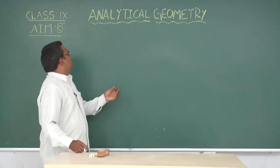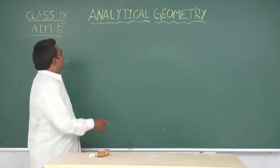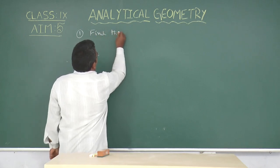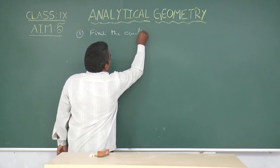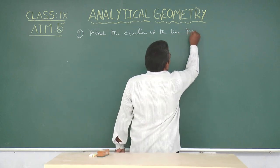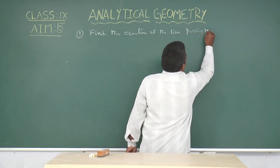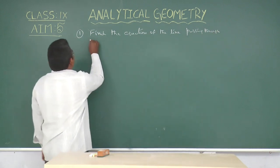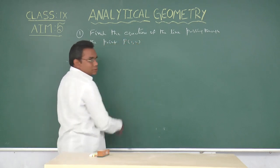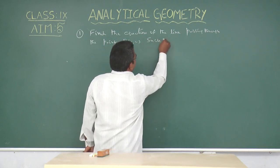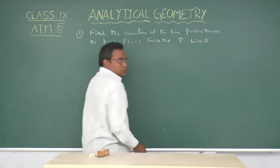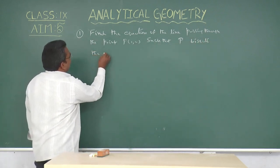Now, we discuss some problems in this M5. First one: find the equation of the line passing through the point capital P (1, 2) such that capital P bisects the segment between the axes.